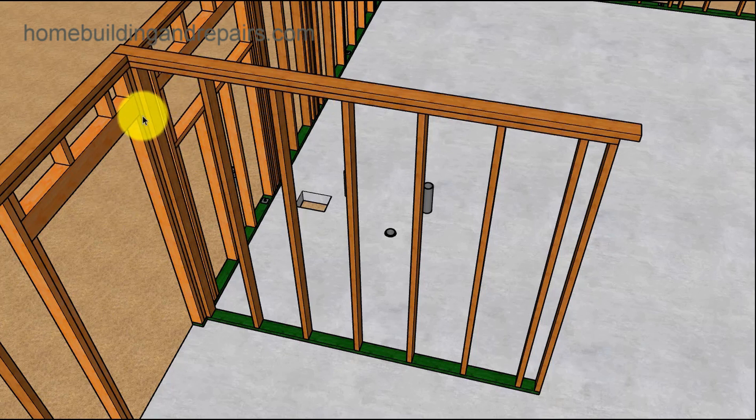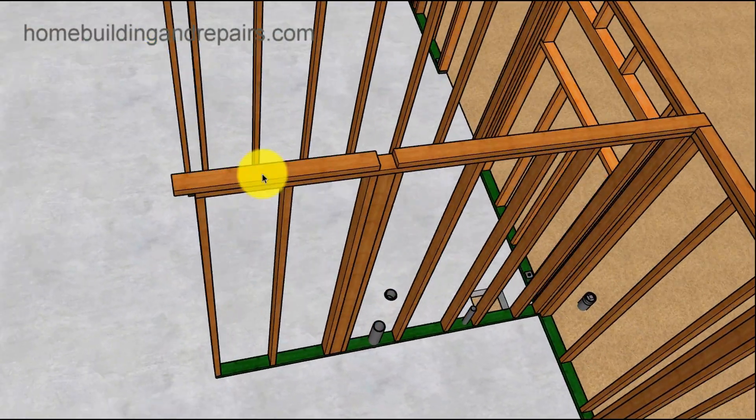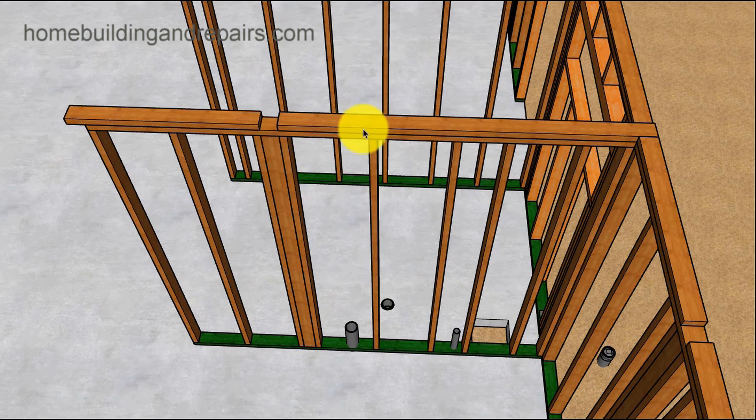So here's the wall that would be separating the bathroom from the living room. Here's the front door. Bathroom wall. A lot of times you might want to make this a 2x6 wall.